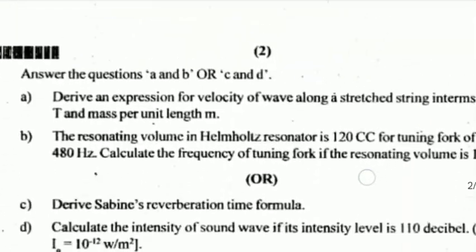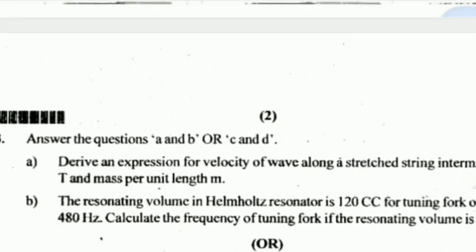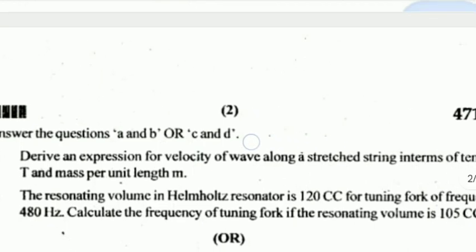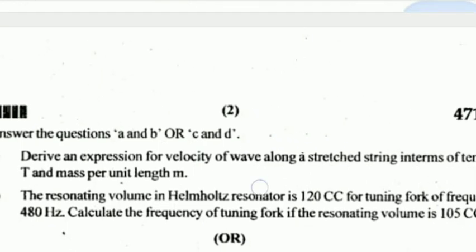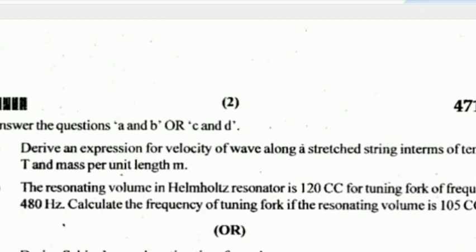Main question number three — answer either A and B or C and D. A) Derive an expression for velocity of a wave along a stretched string in terms of tension T and mass per unit length m. B) The resonating volume in a Helmholtz resonator is 120 cc for a tuning fork of frequency 480 Hz. Calculate the frequency of the tuning fork if the resonating volume is 105 cc.